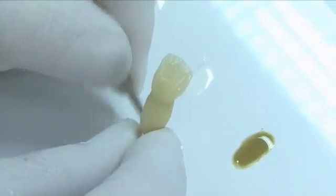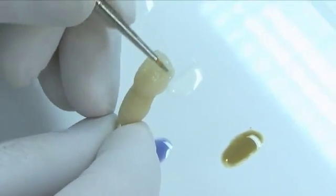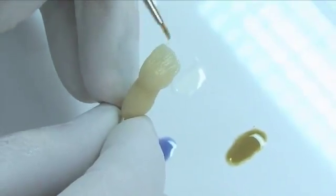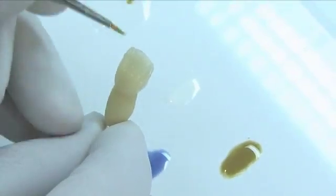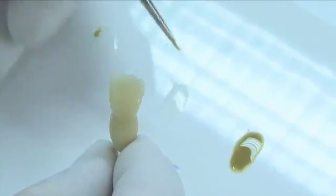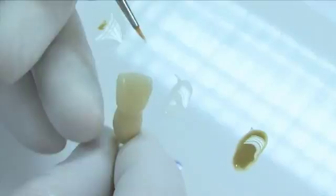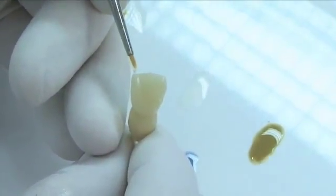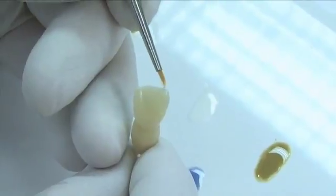Use incisal shade paste to mimic incisal translucency on your restorations. For a slight halo effect, add a touch of white stain along the incisal edge. White stain may also be used to mimic areas of decalcification on the restoration.